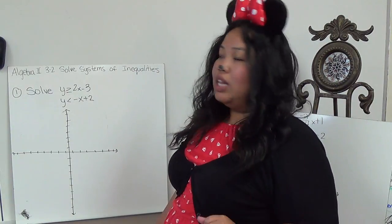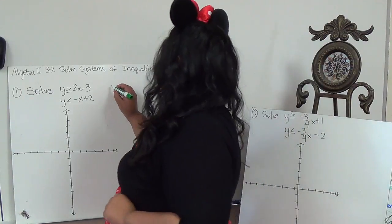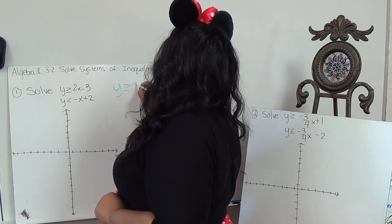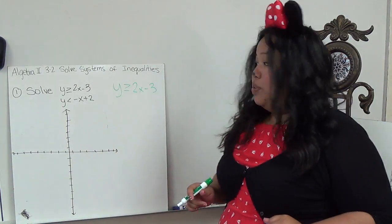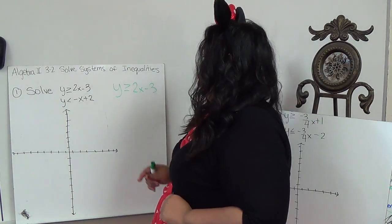That way you can see exactly where they overlap. So we're going to take the first one, y is greater than or equal to 2x minus 3. So in this case, I'm going to first graph the line.